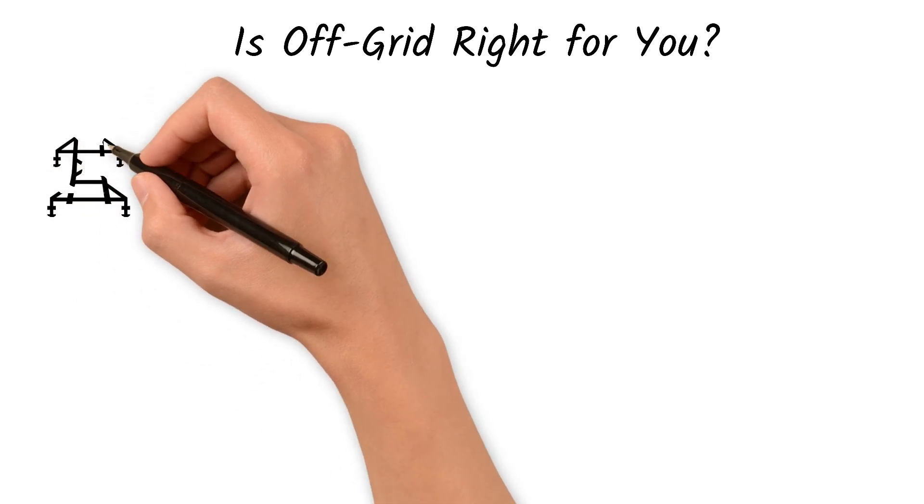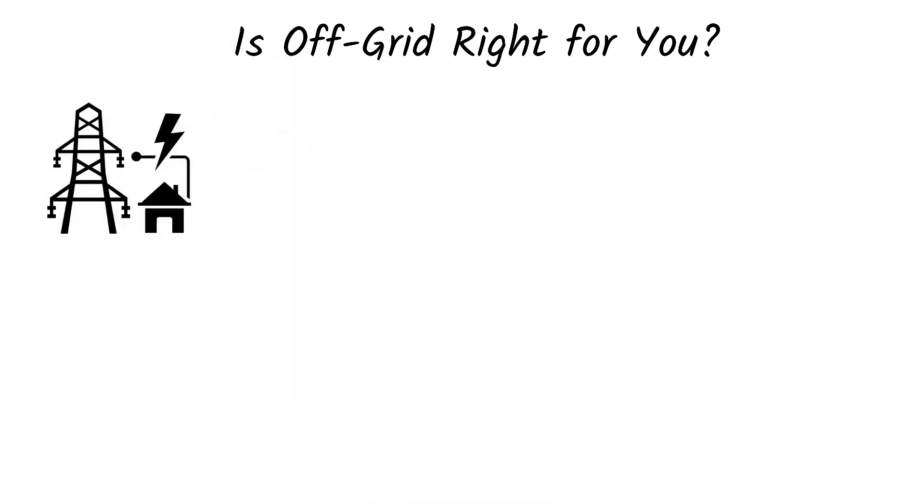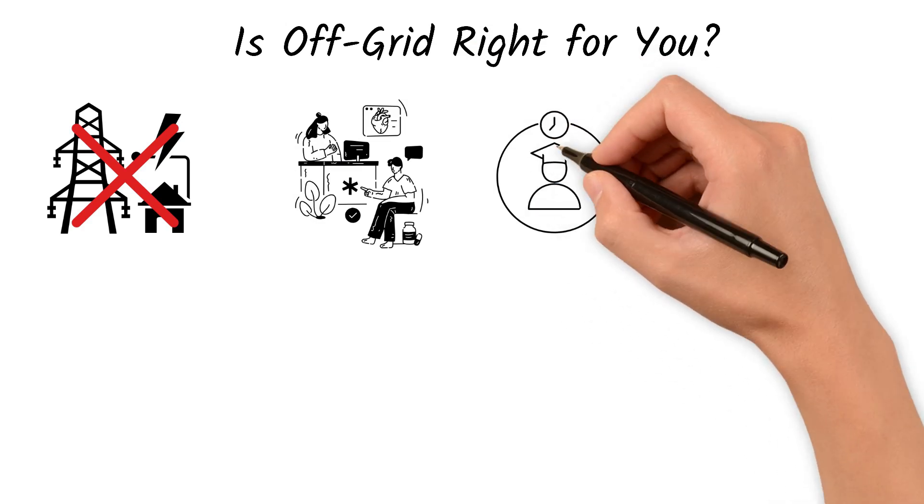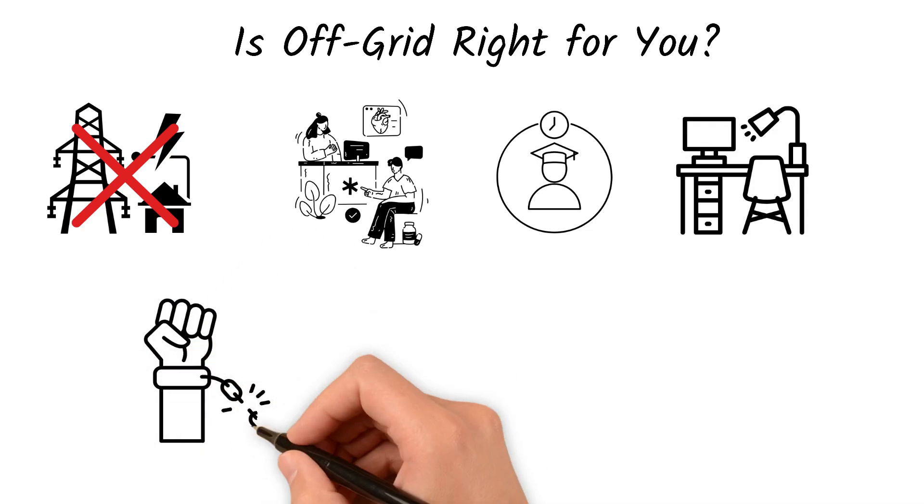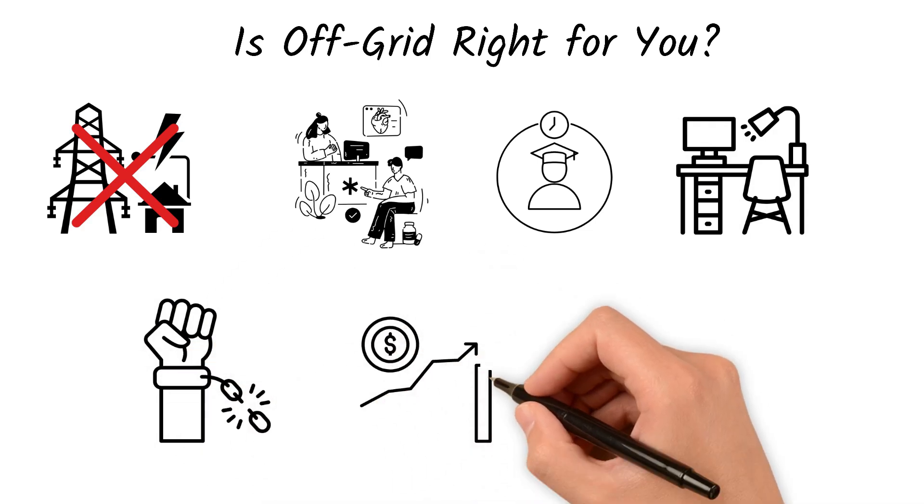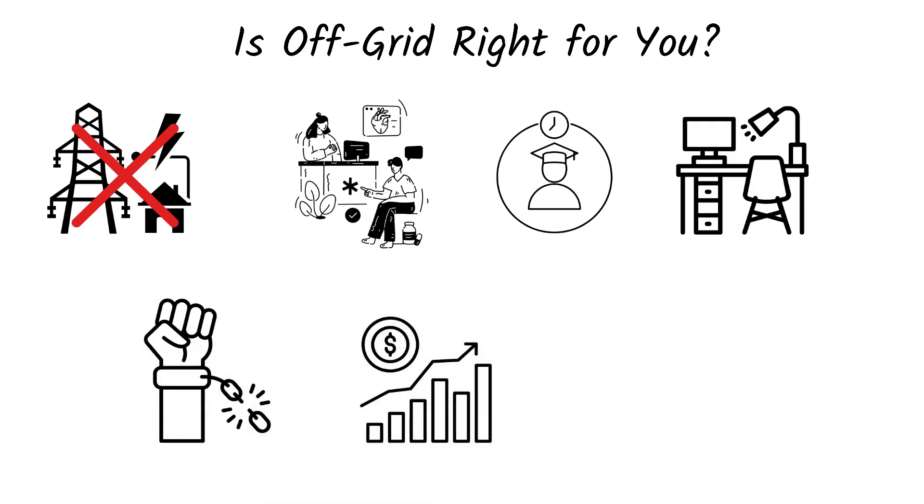Is off-grid right for you? Off-grid solar is ideal if you live in a rural area without grid access. You require reliable 24-7 power, such as for a clinic, school, or home office. You desire complete energy independence. And you're prepared for a higher upfront investment.